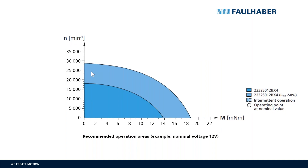The light blue area shows the operating area in cooled condition, still continuous operation. We see here at this line the values for RTH2 50% reduced, which is the motor attached to a metal flange.